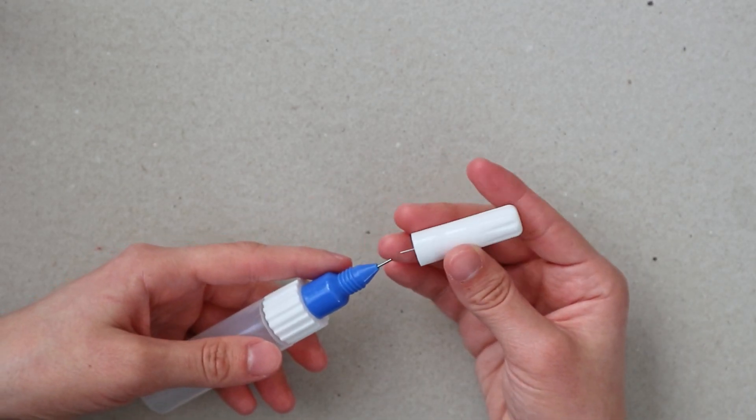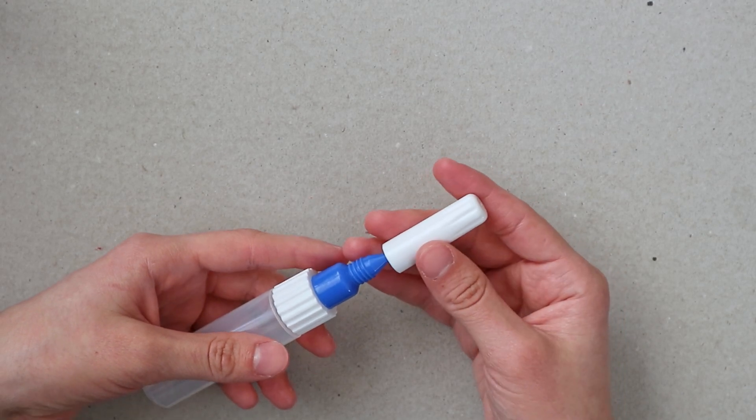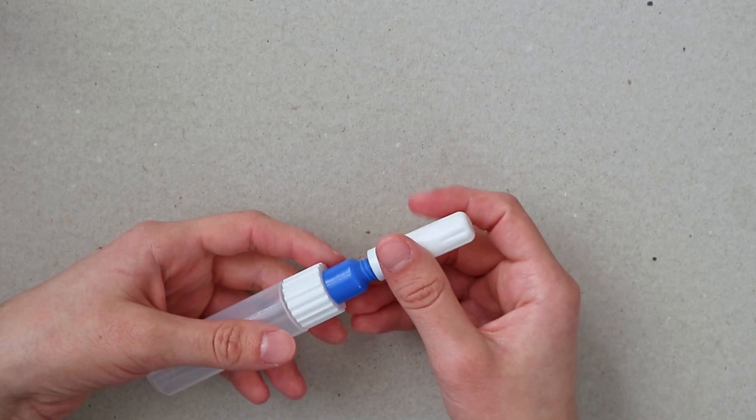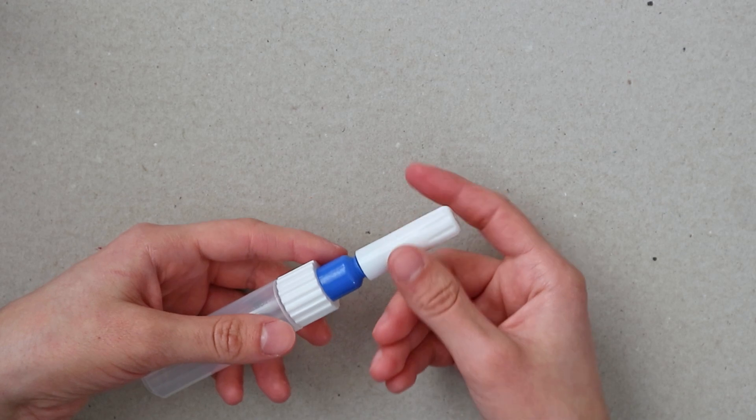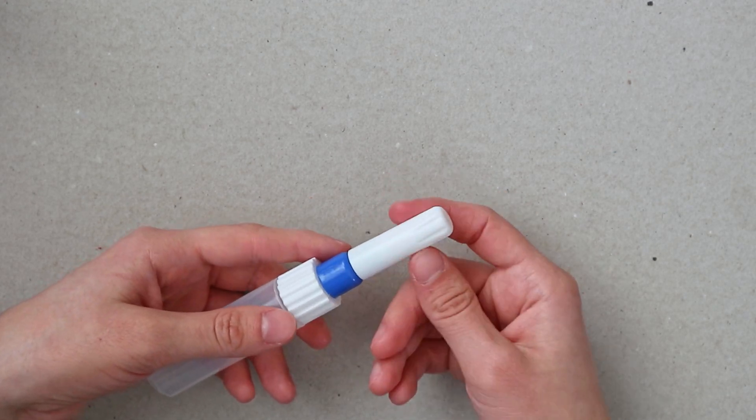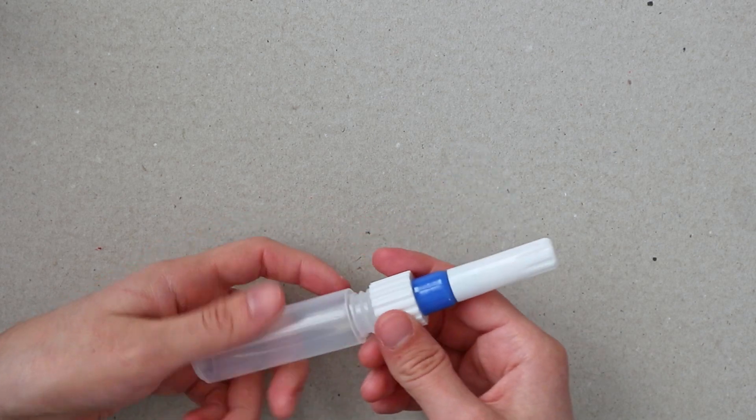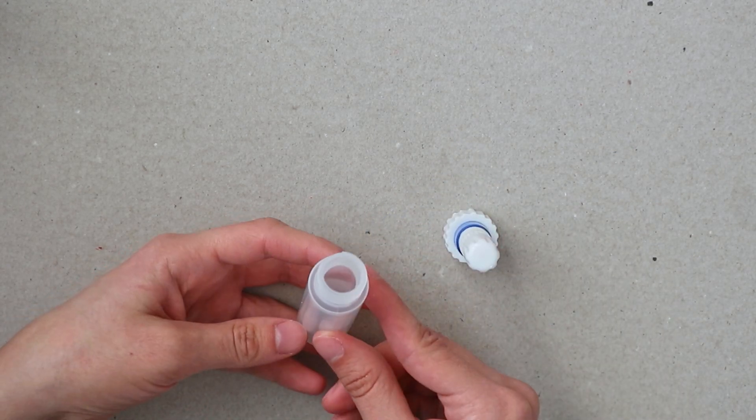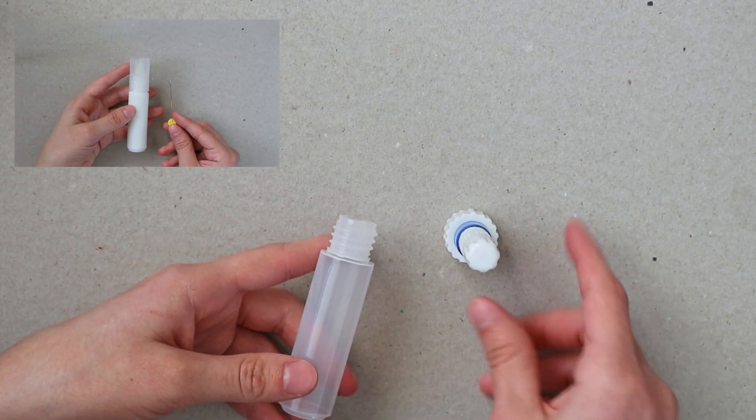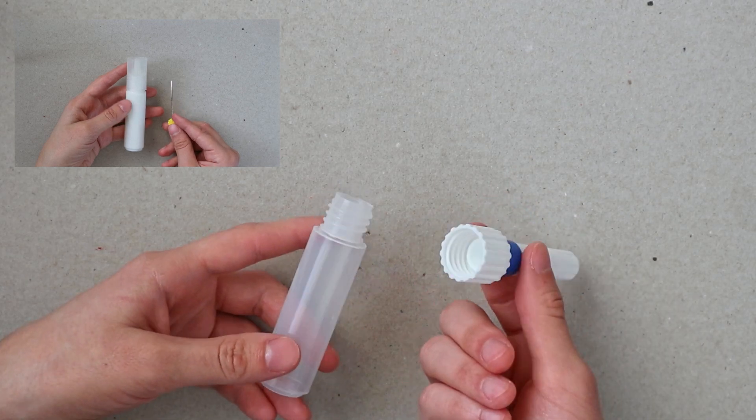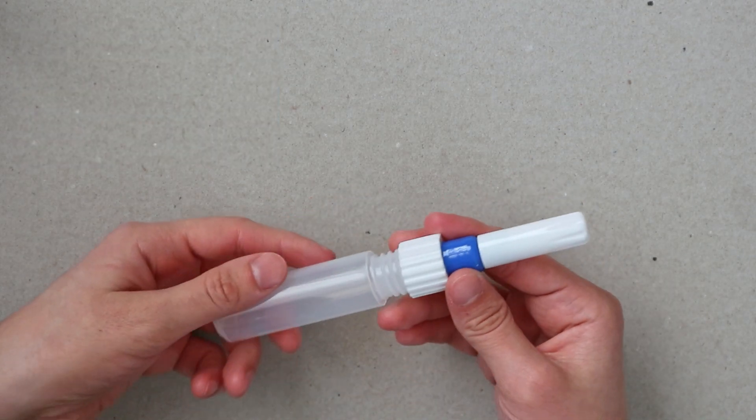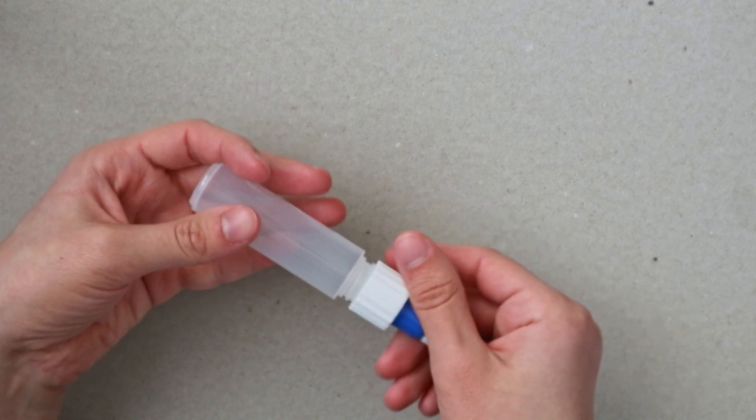You can also see that it has a needle that comes out from the applicator once you take the lid off, and that needle helps the glue to not get clogged inside the fine tip. That's a really important point for me because with my previous one I would use a needle that I had around the house to unclog the glue every time it dried inside there.